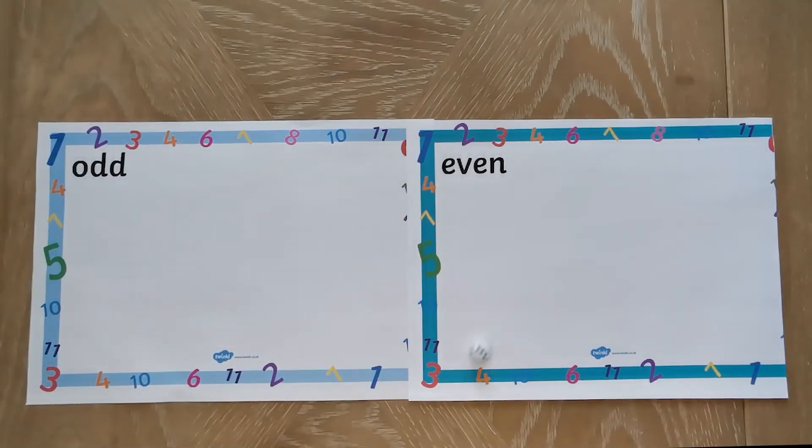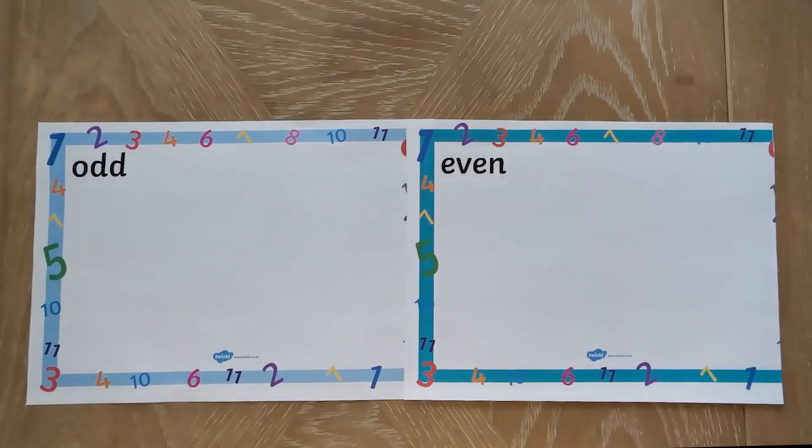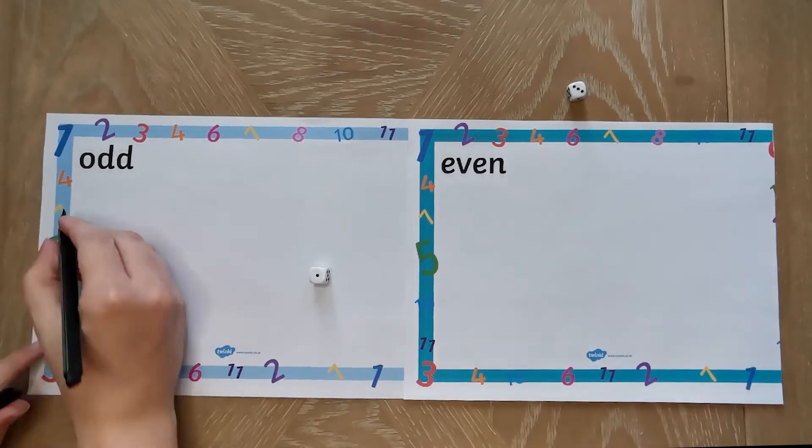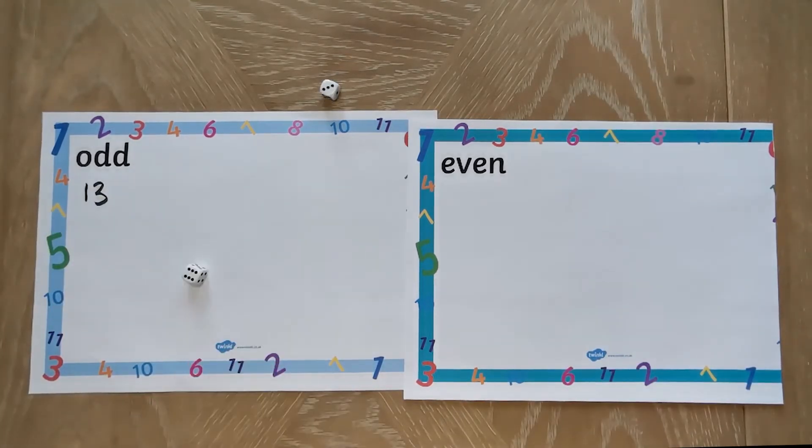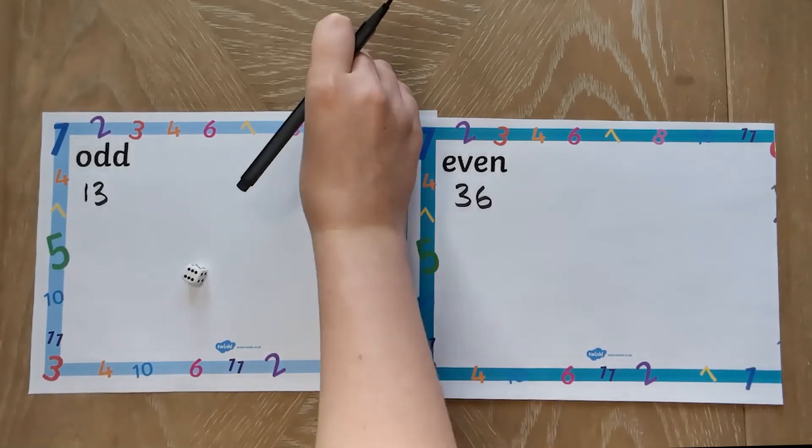Once children are confident sorting the number cards, you can extend their learning by asking them to roll two dice to make a two-digit number. They should then sort this number into either odd or even.